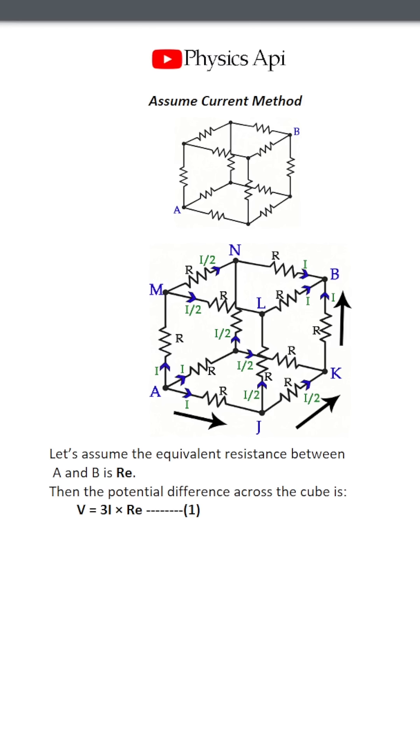Now, let's calculate the same potential difference by considering the specific path A, J, K, B. You can choose any path, but we select this one. Equating both expressions for V.